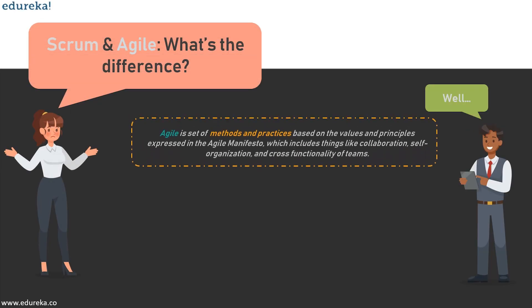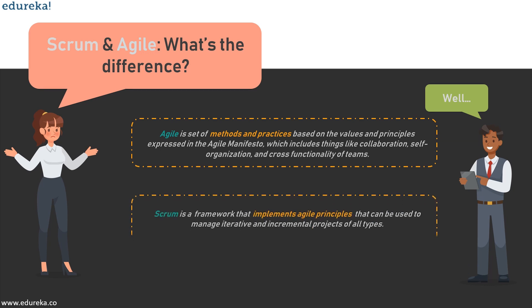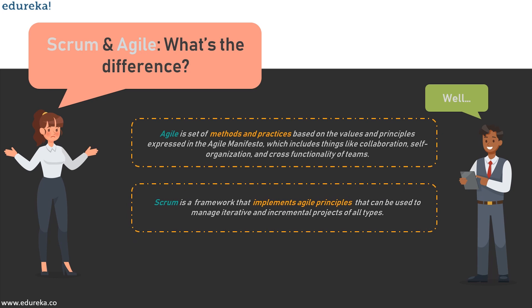Agile refers to a set of methods and practices based on values and principles expressed in the Agile Manifesto. This manifesto includes things like collaboration, self-organization, cross-functionality, and teamwork, among many other things. Scrum is a framework that is used to implement Agile development. While a team can be Agile without practicing Scrum, it cannot practice Scrum and not be Agile. Confused yet? Don't worry — here's a simple analogy.